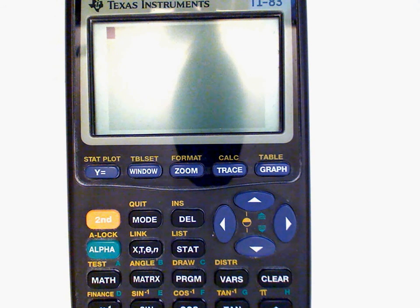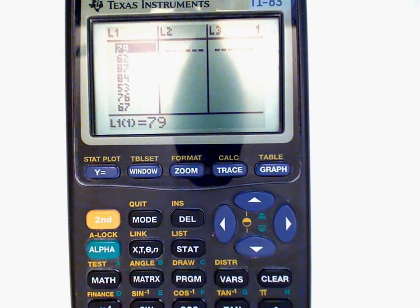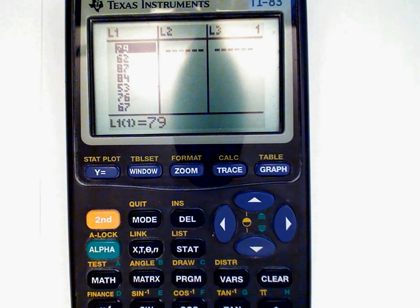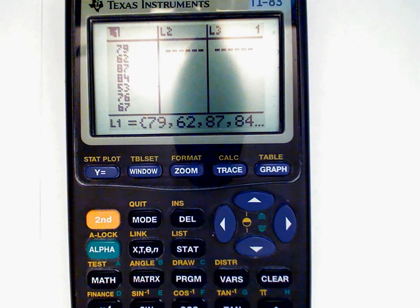First we're going to need to enter our data set. Remember to enter a data set on the TI-83, we need to press the stat button, and then select edit. Press enter right here. I have my data set here for the example that we did in the previous section. I need to clear that out. So I'll arrow up to L1, press clear, enter.